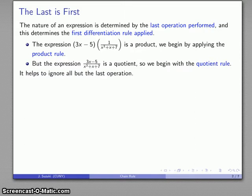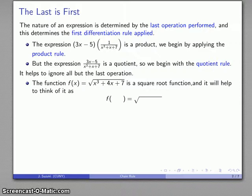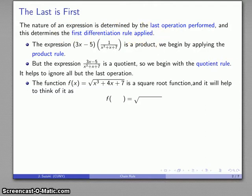It helps if we ignore everything but the last thing that we do. Take the function f(x) = √(x³ + 4x + 7). If I take x³, take x times 4, add 7, add all those things together, then hit the square root button on the calculator, the last thing I do is take the square root. This is a square root function, and it's convenient to think of it as f of something — specifically the square root of something — and that tells me what the first thing I differentiate will be.